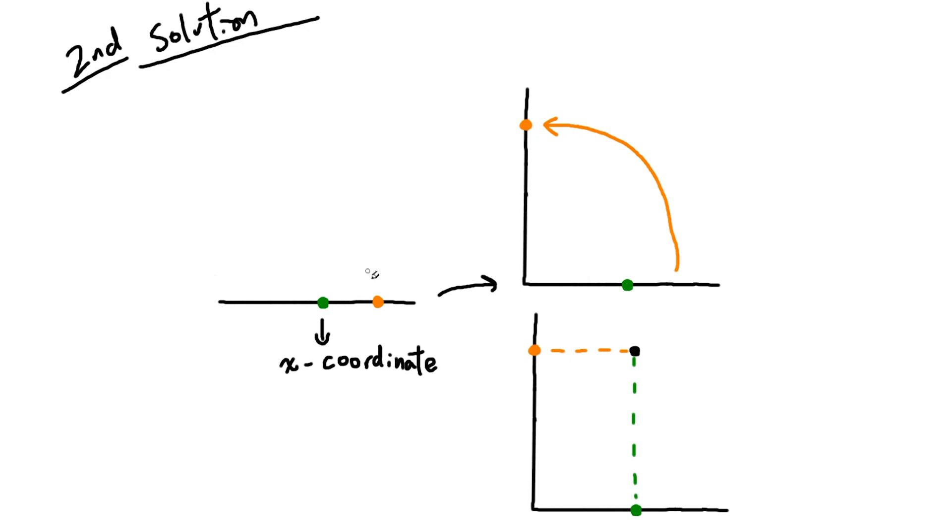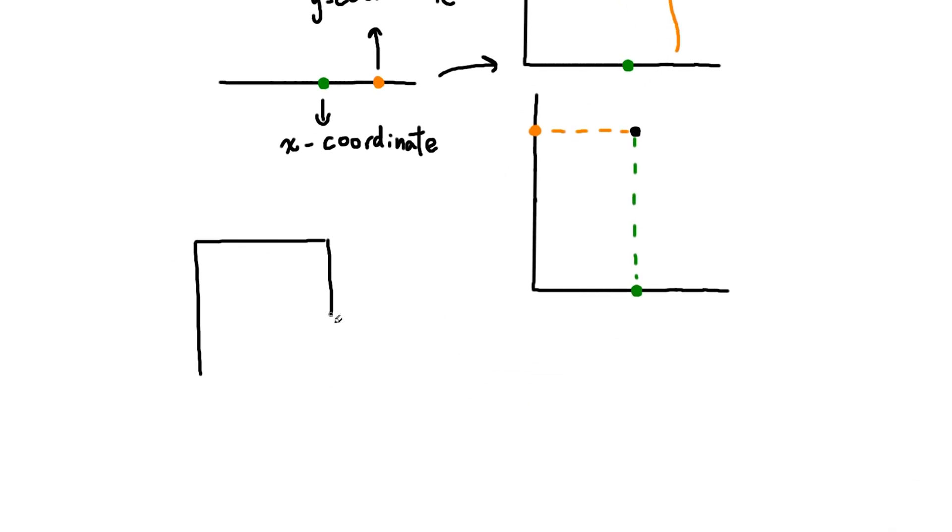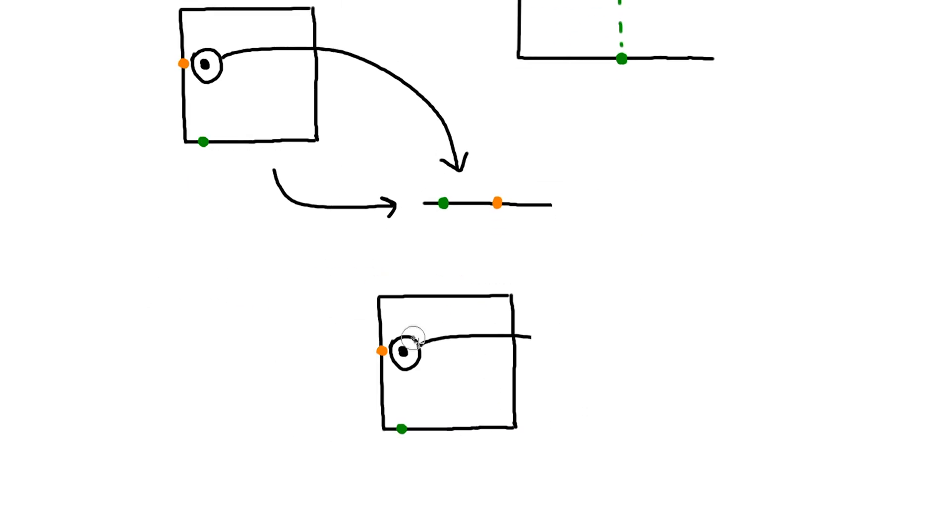If you want to think about it using coordinates, then the green dot is your x-coordinate, and the orange dot is your y-coordinate. So now we've created something called a one-to-one correspondence. For every singular point in our square, we have a corresponding pair of points on our line, and vice versa. So let's see how this helps us with our original question about distance.